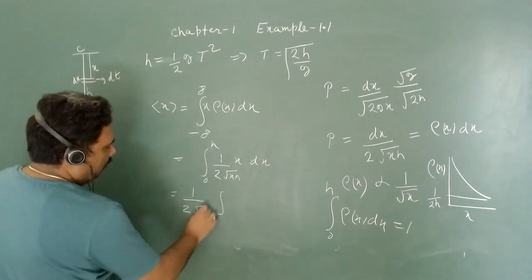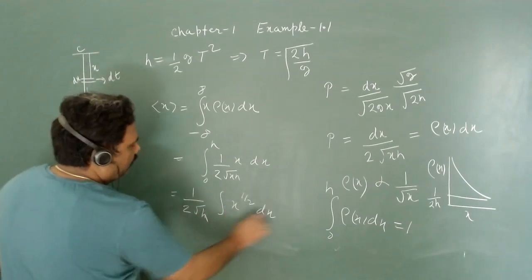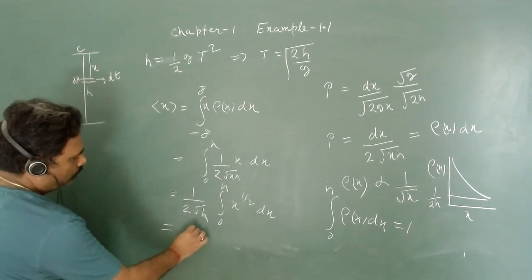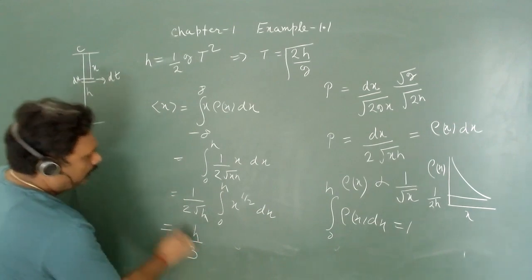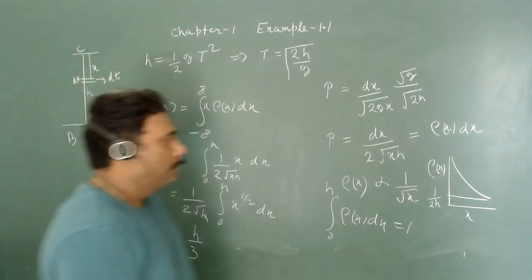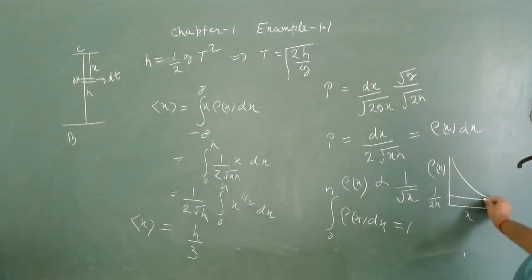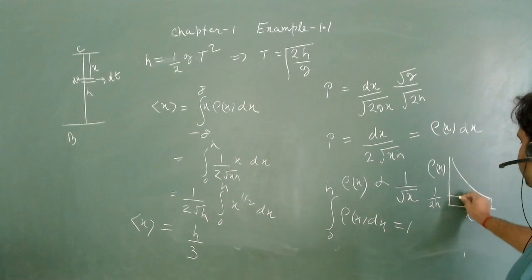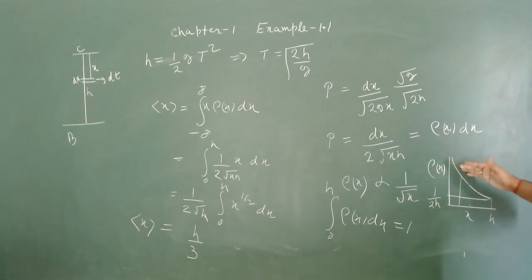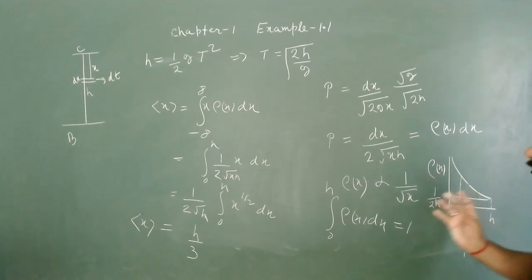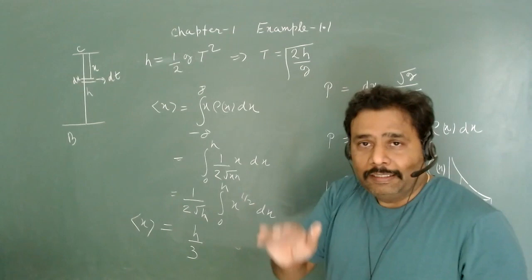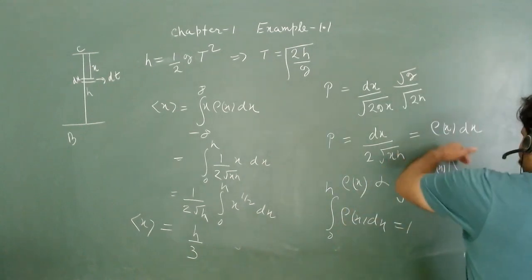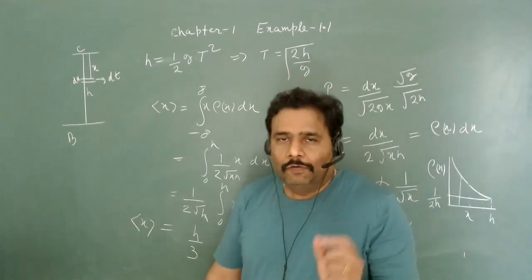Evaluating the integral: ⟨x⟩ = (1/(2√h)) ∫₀ʰ x^(1/2) dx = (1/(2√h)) · [x^(3/2)/(3/2)]₀ʰ = h/3. So the average value of x is h/3. Compared to the midpoint h/2, the average is lower, meaning as the particle approaches h the probability is decreasing.